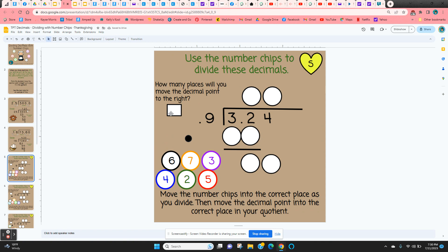So the first thing that's going to ask them is how many places will you move the decimal point to the right? Well, on this one, we only need to move it one. So they're going to type in a one.